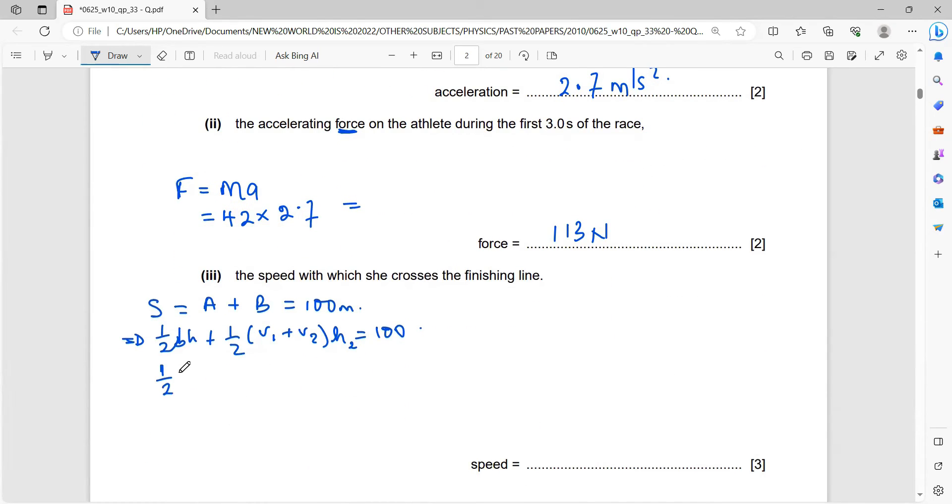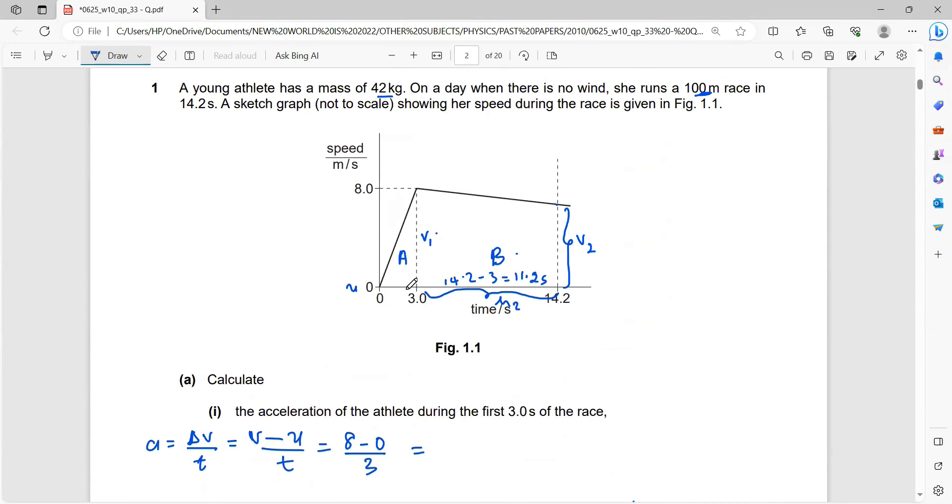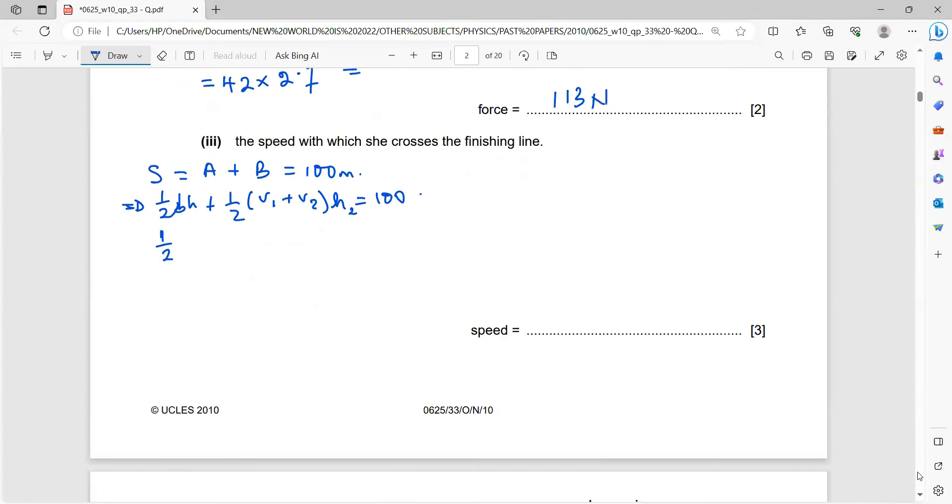Now, what is your base here? Your base here for your A, your base is 3, and your height is 8. So your base is 3 times 3 times your height, which is 8, plus half. Your V1 is 8, plus your V2, which is what we are looking for, and your height 2, which is what we just calculated, 11.2, and all that should be 100.